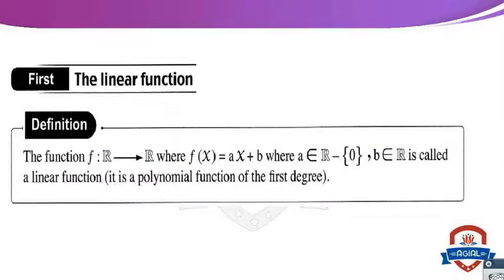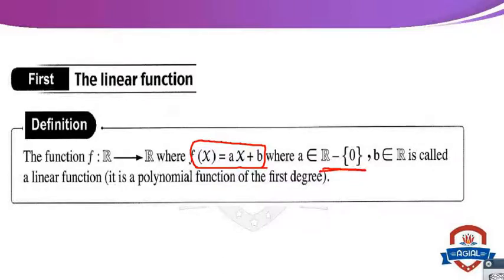Number 1: the linear function. What is the meaning of linear function? A linear function is a function from R to R, from the set of real numbers to the set of real numbers, where f(x) equals ax plus b. Here, a belongs to the set of real numbers minus the set of zero, and b belongs to the set of real numbers. It is called a linear function — the polynomial function of the first degree.